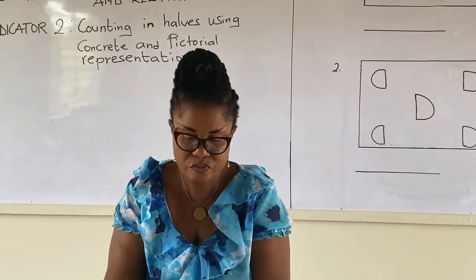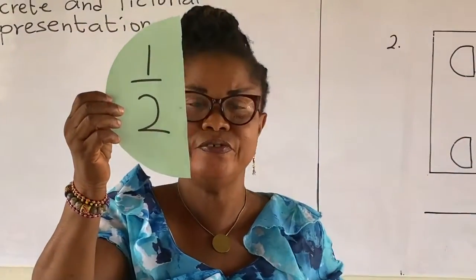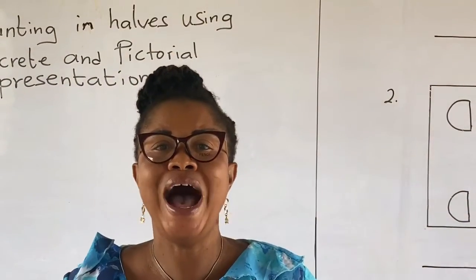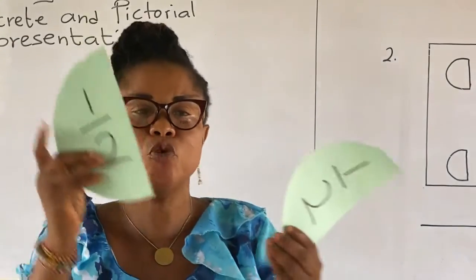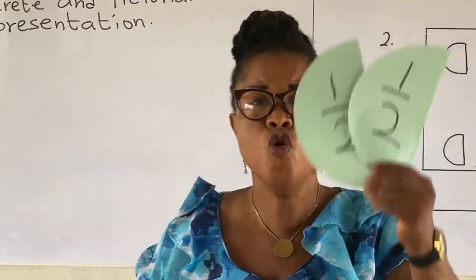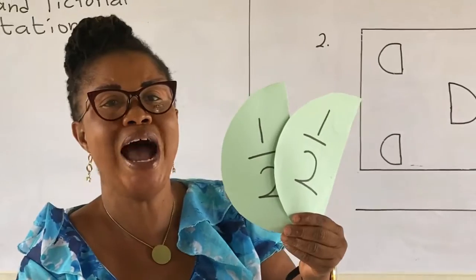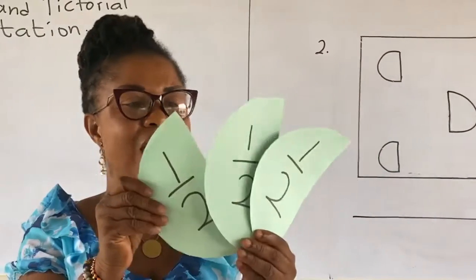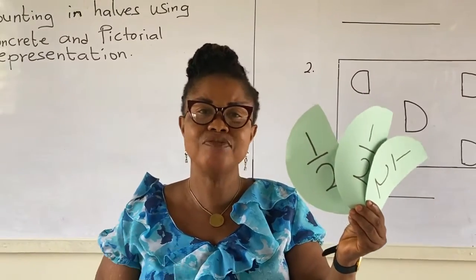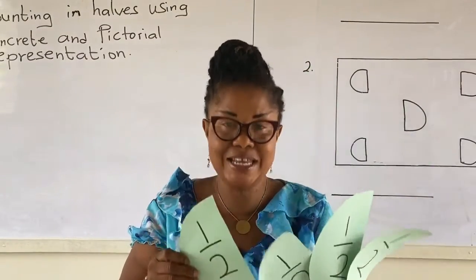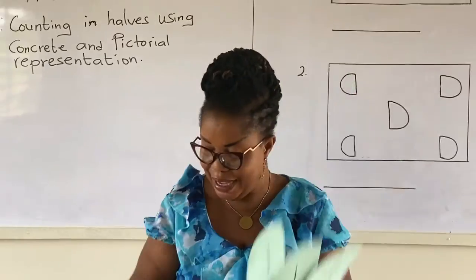Now, this is a half. When we have this and we add another half to it, we have two halves. When we have another half to it, we have three halves. When we add another half to it, we have four halves. And it continues like that.